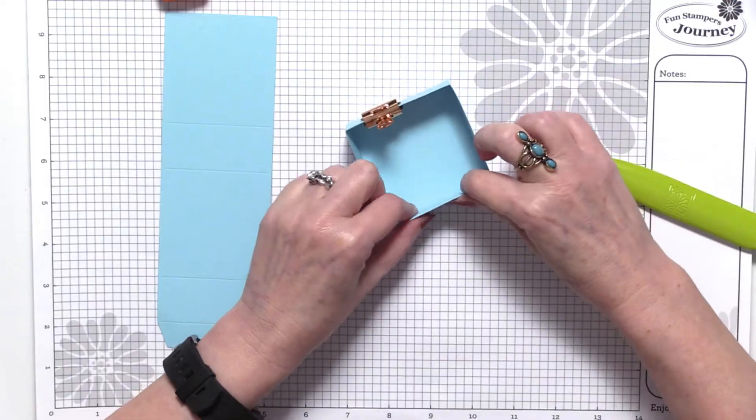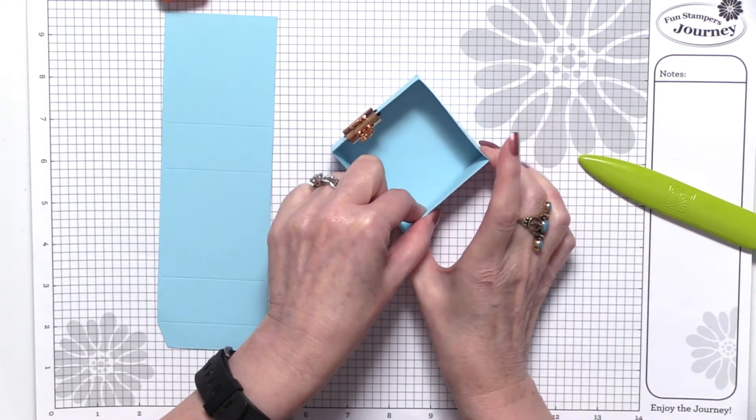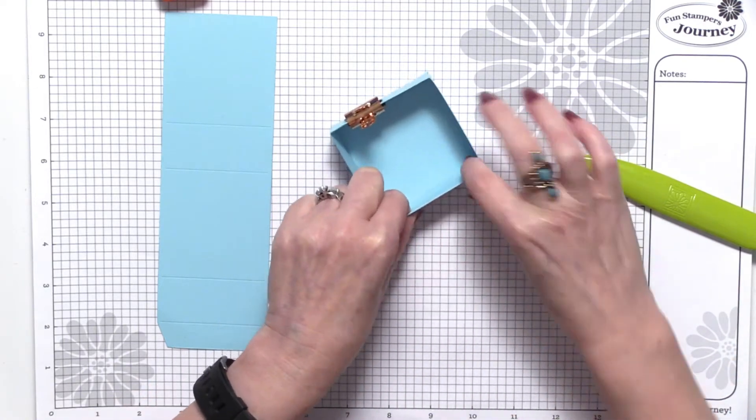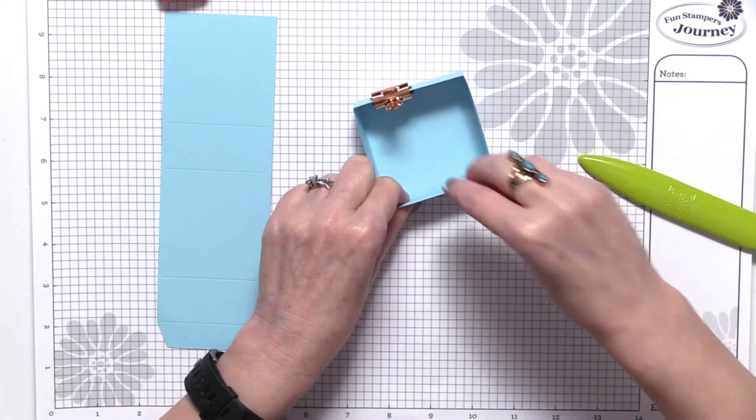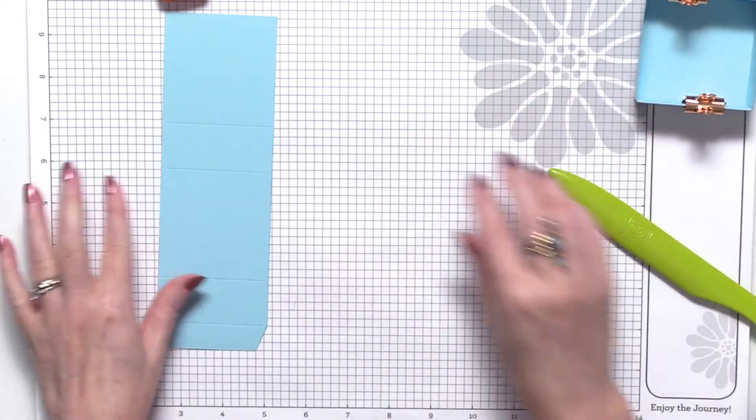Okay, folding it down. Once again, squeeze in the sides to make sure you've got your angles nice and straight. Okay, so we're going to set that part aside.